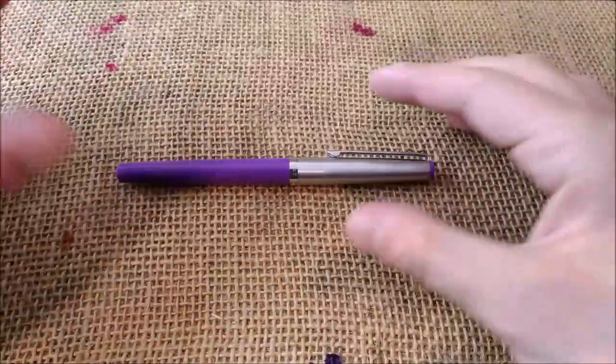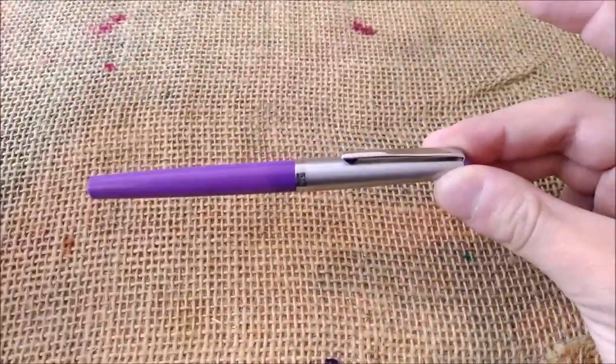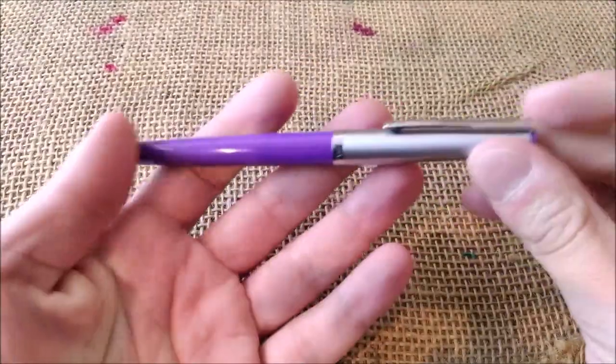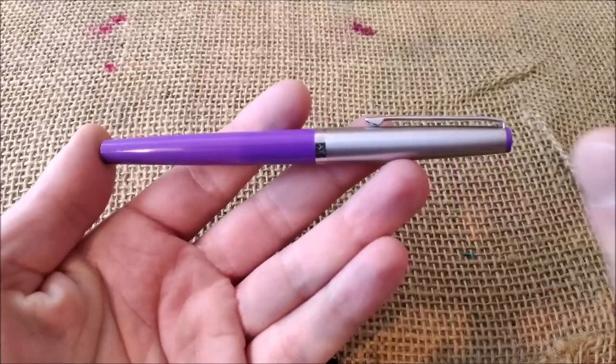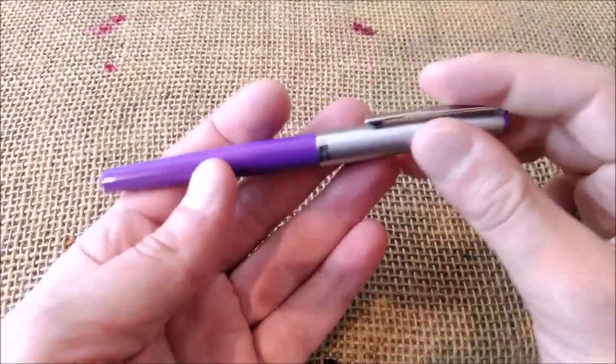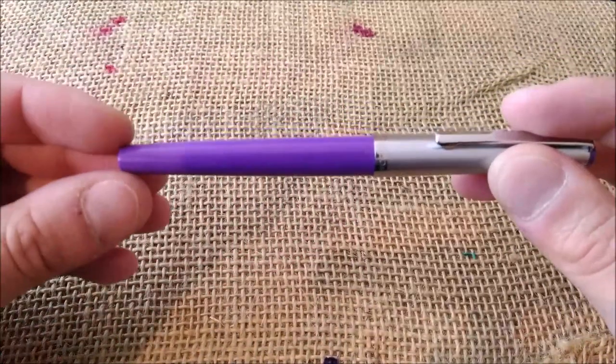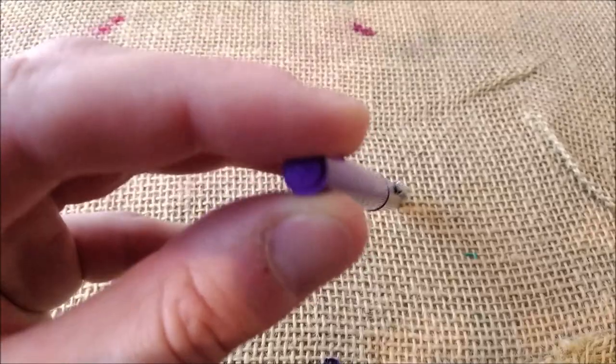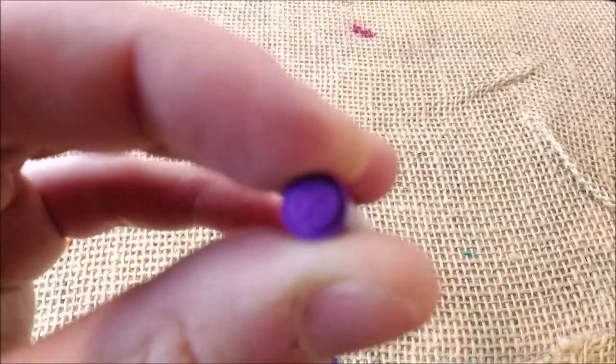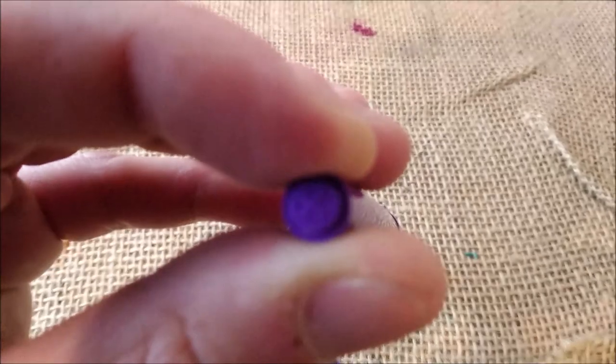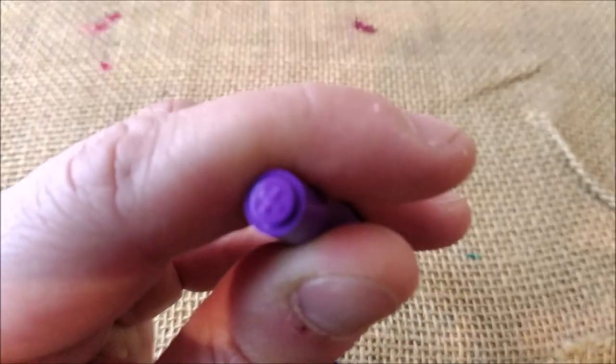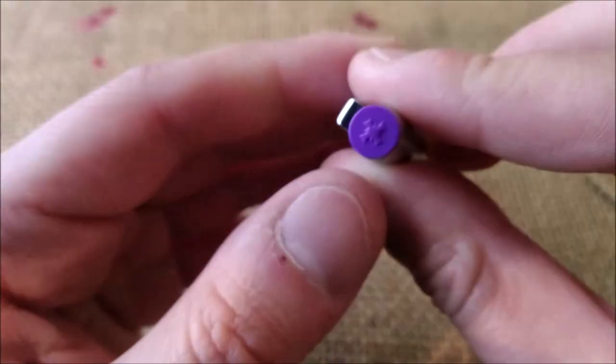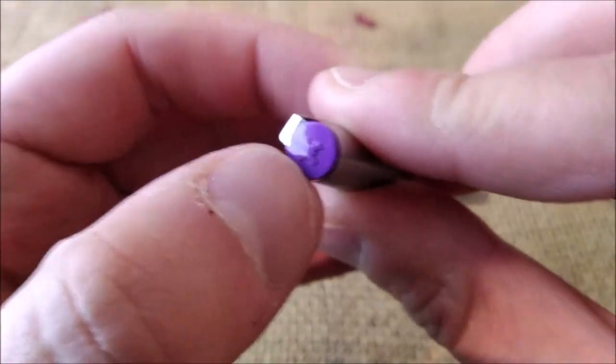So today I'm going to show you this pen and talk a little bit about how it performs. Sorry my voice is still not okay. This pen has a purple barrel that tapers down. It has the Diplomat cross logo on the bottom of the barrel and you can also see the same on the top of the cap.